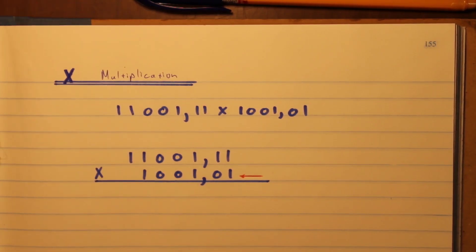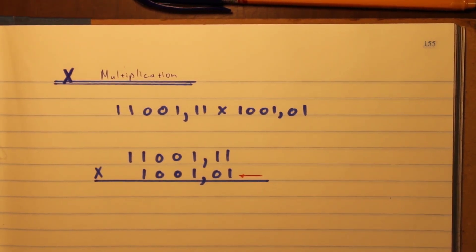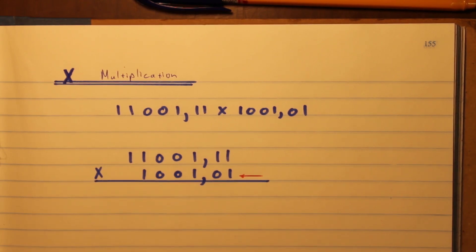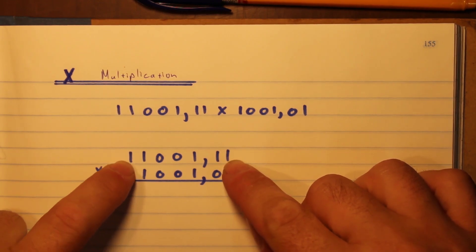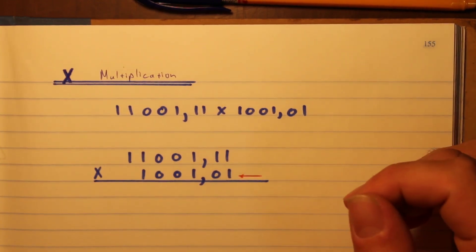We're going to be looking at binary multiplication. It's actually a very simple method of multiplying two numbers. You just have to remember that anything times one is one — so 25 in decimal, 25 times one is 25. Any number times one is that same number, and it's the same in binary. So if I take the top number and multiply it by one, it's the same number.